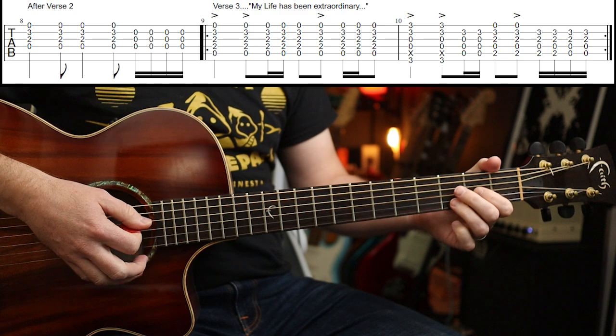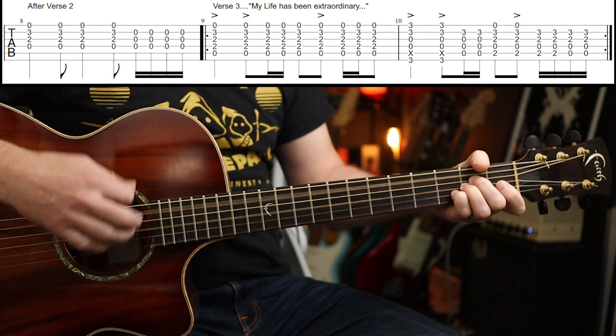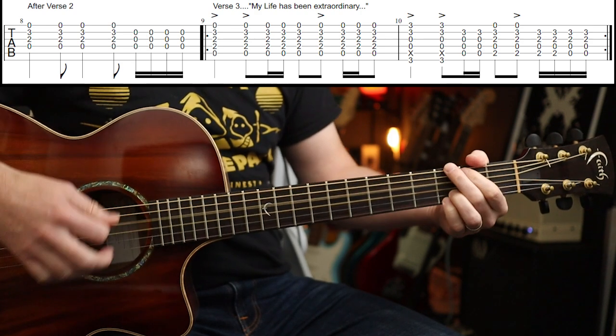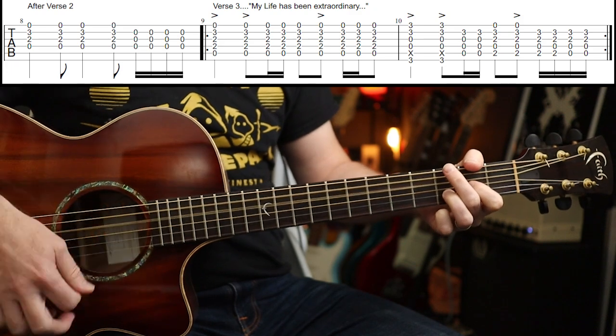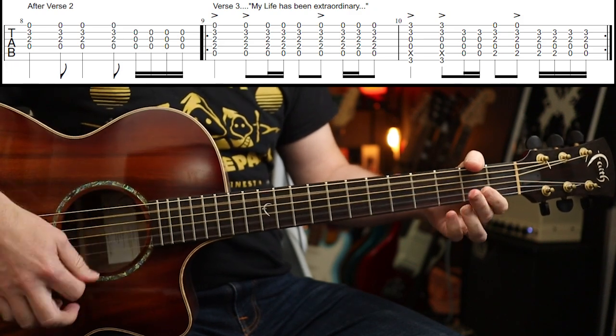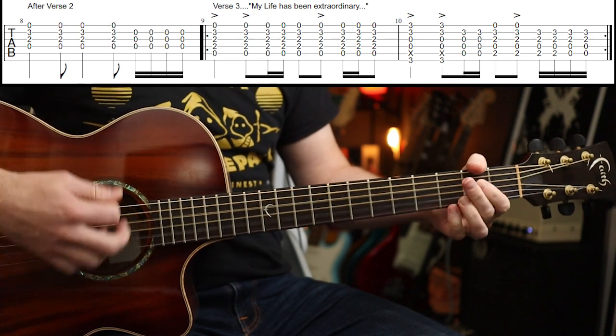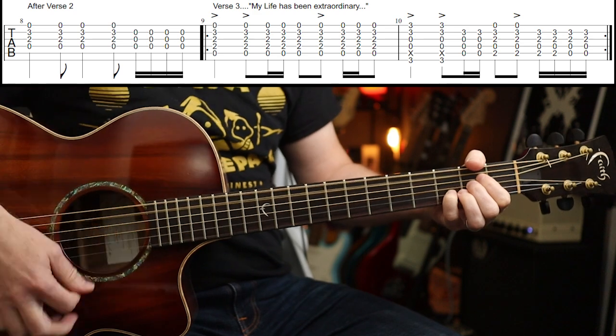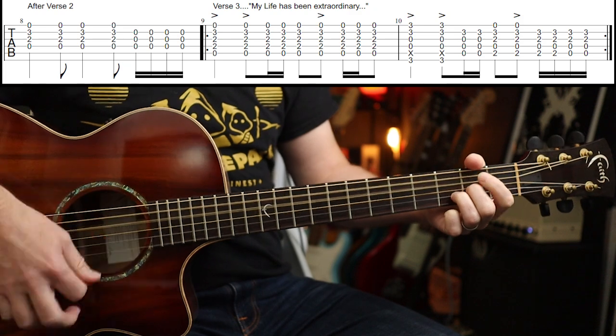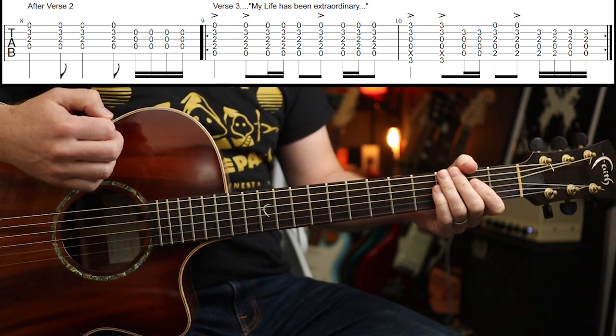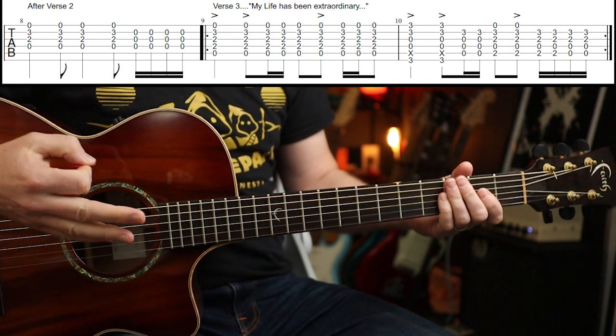After the second verse, again, it does another bar of D. So, coming out of that would be. And then, back in. So, that's. And then, that's verse three then, 'My life has been extraordinary.' Which, it frankly has, Billy.